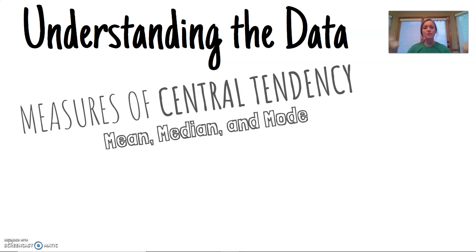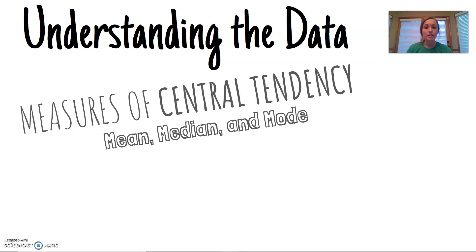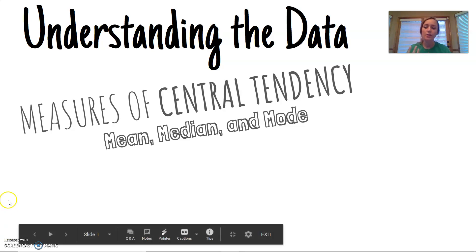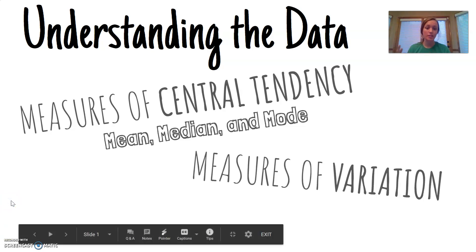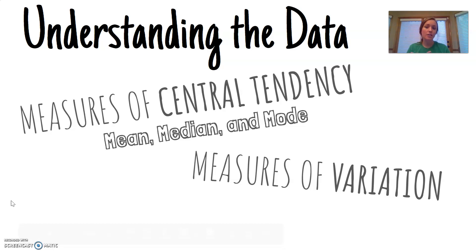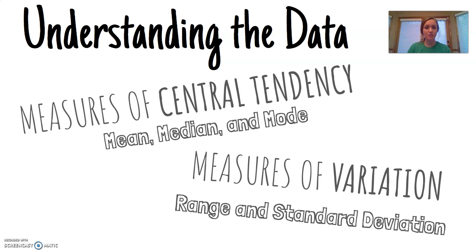Measures of central tendency — mean, median, and mode — help us summarize our data in just one measurement, giving us a bigger picture of a large data set. The next measurement tools we can use are measures of variation, which help us understand the distance between our data points. Specifically, there are two we use: range and standard deviation.